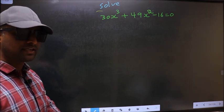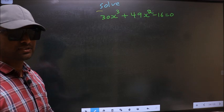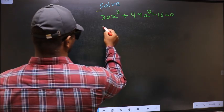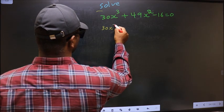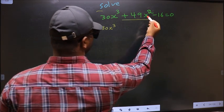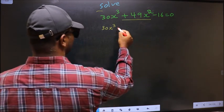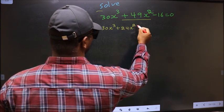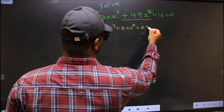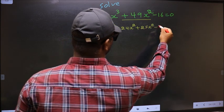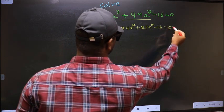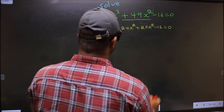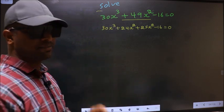For that, we have to change the x² term. In place of 49x², I write plus 24x² plus 25x² minus 16 equal to 0.